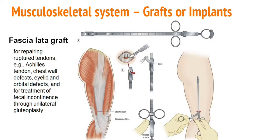Next we have fascia lata graft. To obtain the fascia lata graft, the physician makes small incisions over the lateral thigh of the patient, then advances a stripper instrument underneath the fascia. By maintaining downward pressure on the cut end of the fascia lata, the physician obtains the desired length, then removes the stripping instrument and sutures the wound. If the fascia lata graft obtained is larger in size of length and width, then report it as a complex procedure.